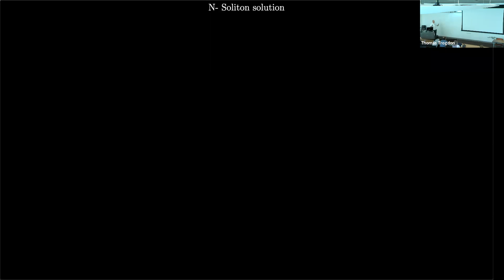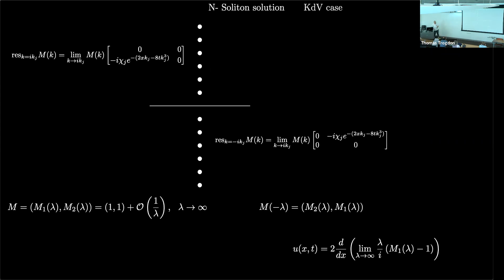Remember, that was a two-soliton solution — there are two peaks that kind of slosh about. Now what if the number two is replaced by 25, 30 — you can even imagine going as large as 35. With an arbitrary N, I pose a very similar problem: find a pair of meromorphic functions M1 and M2 where at each pole in the upper half plane, the residues of M1 are related to the values of M2, and in the lower half plane the residues of M2 are related to the values of M1.